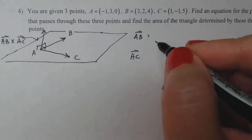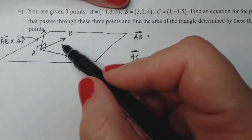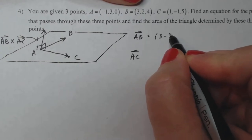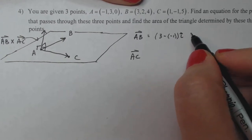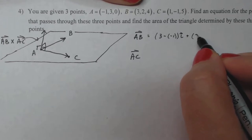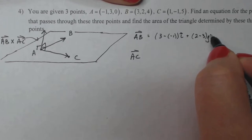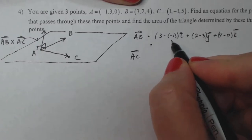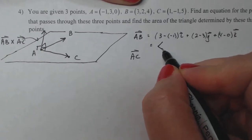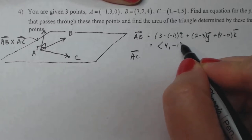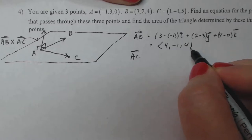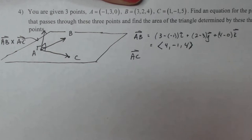So if I want to find the vector AB, I'm going from A to B. So B's gotta be subtracted first. So here's my numbers. I have to do 3 minus negative 1 i plus 2 minus 3 j plus 4 minus 0 k. So what does that give me? That gives me 4i minus 1j and 4k.